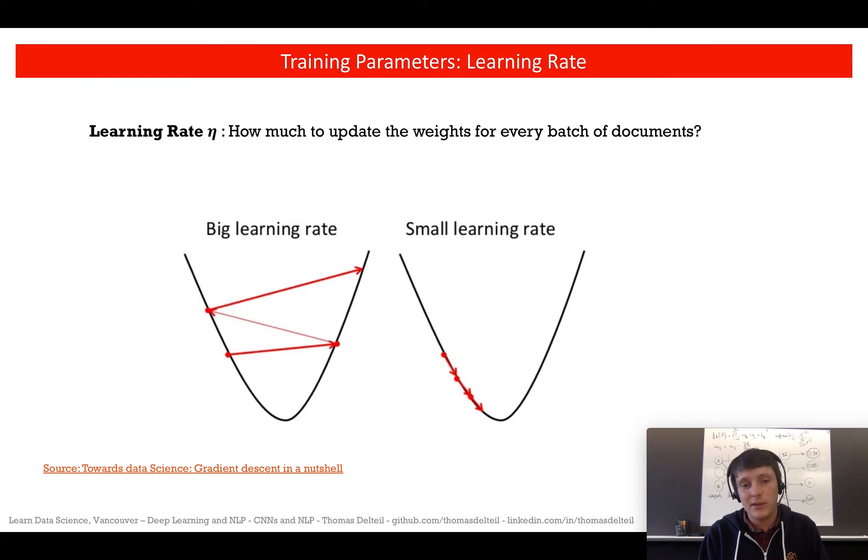We have a few parameters that are useful during training. For example, we have the learning rate. How much do we want to update the weights on every batch? If you put a too big learning rate, it's basically going to be like the first example. We start here, we know we need to go a bit on the right, but we're going to overshoot the local minima. And then, oh, we should go back on the left. Like that, you could sometimes never converge or the weights are just going to go crazy basically.